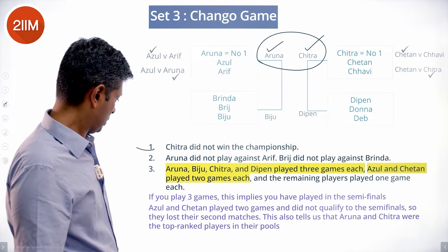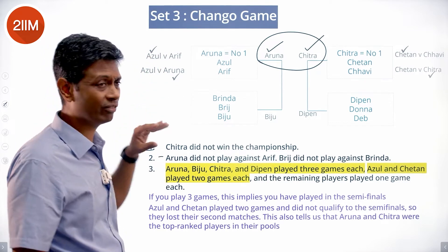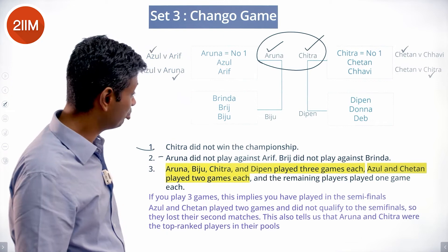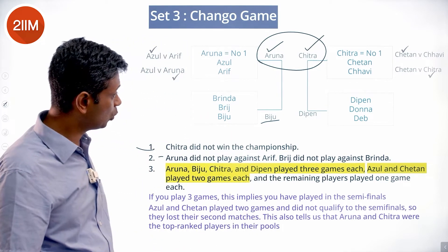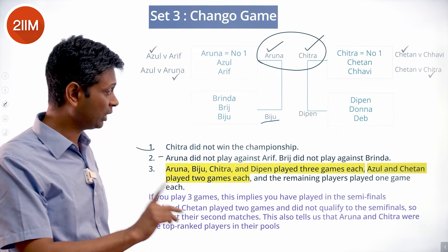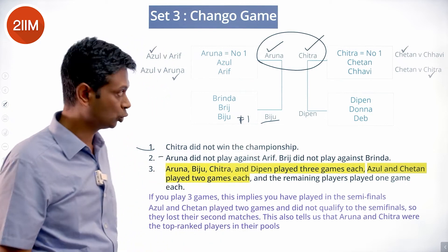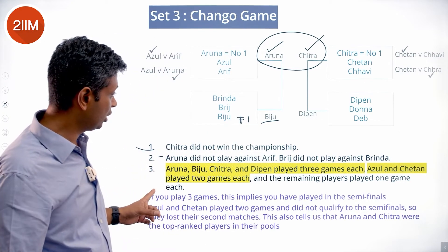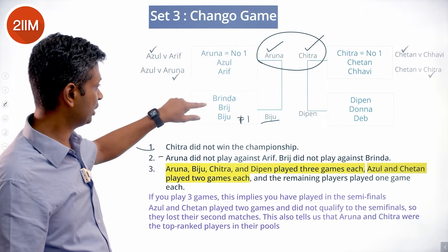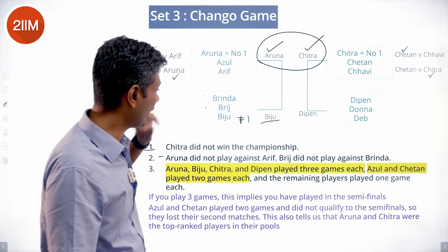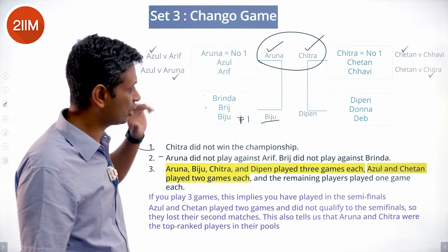Returning to the clue: Bridge did not play against Brinda. Since Biju qualified, Biju won a match. If Biju had been ranked number one, then Brinda and Bridge would have played each other as the first match — but we know Bridge and Brinda did not play each other. Therefore Biju was not ranked number one in Group B.